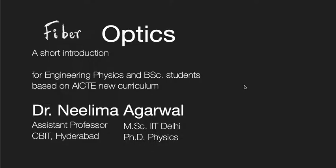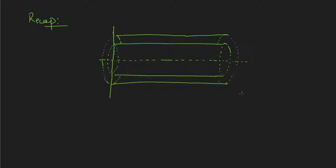Welcome back to our lectures on fiber optics. We started the short introduction on fiber optics by understanding the basic principle and construction of an optical fiber. In the last lecture, I explained that when light is launched at one side of an optical fiber, it undergoes total internal reflection when it satisfies the basic conditions: the light should pass from denser to rarer media and the angle of incidence should be greater than the critical angle.